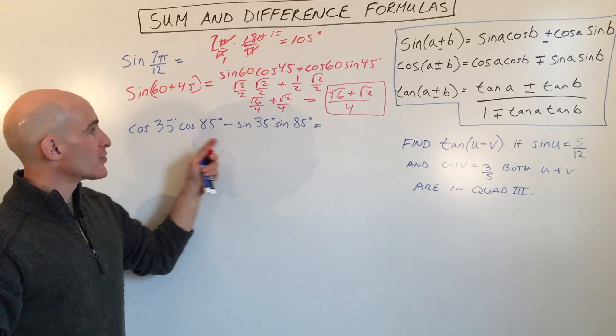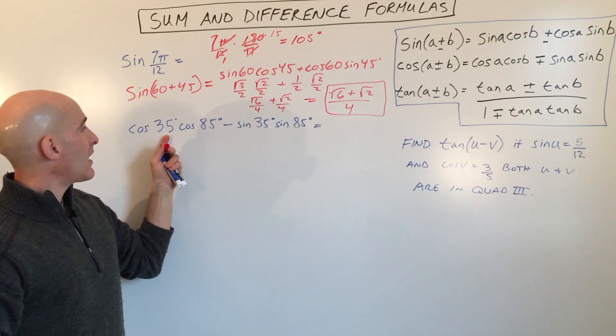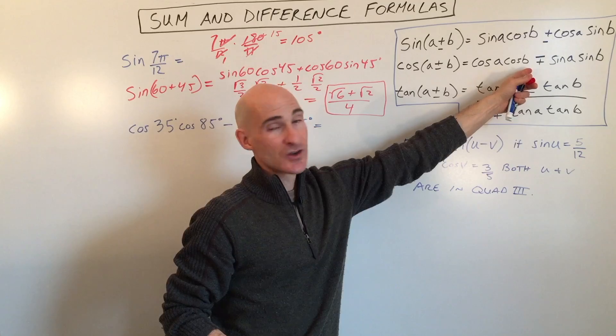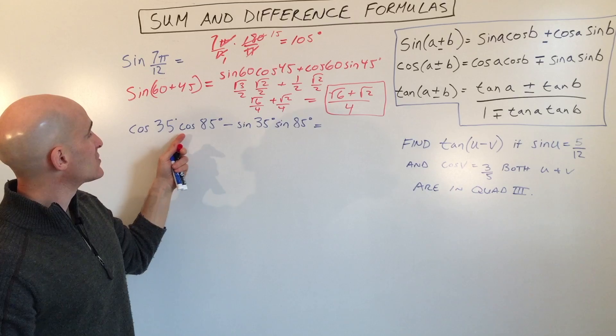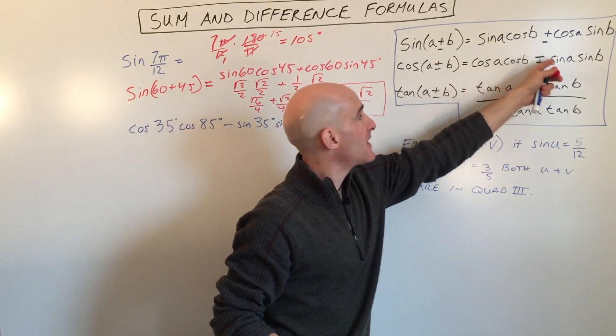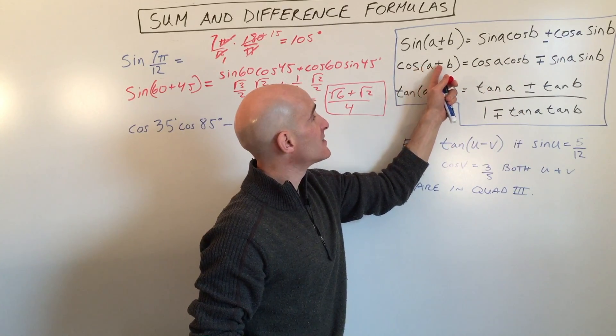So now let's look at another example. Here what they're giving us is actually the right side of this equation. And you want to try to identify which one it is that they're giving us. It looks like it's cosine cosine minus sine sine. Cosine cosine minus sine sine. You can see that's going to be the cosine sum formula.